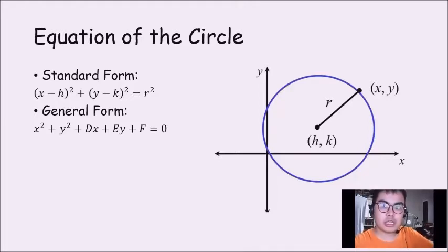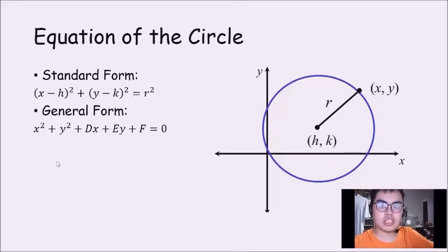Here is the standard form where the center is (h, k) and the radius is r, while this is the general form of the circle where the numerical coefficients of x squared and y squared must be equal.